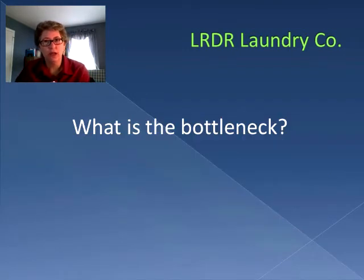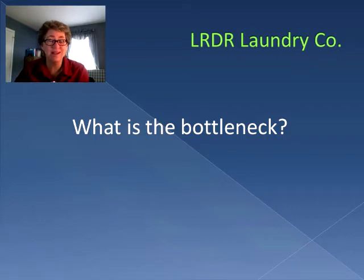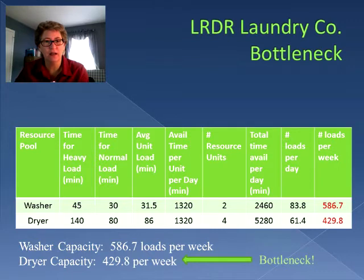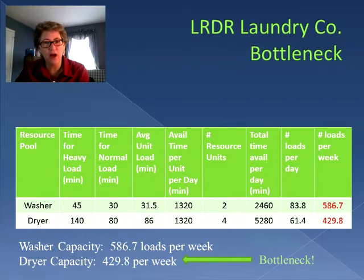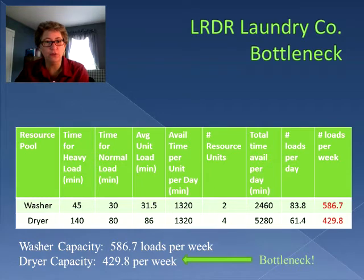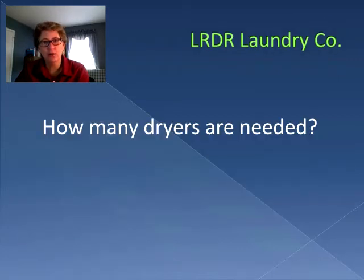When we worked on the problem in the last session, the big key was identifying the bottleneck. The bottleneck is the resource pool that is the slowest — it is what's actually preventing us from meeting our demand requirements. The washer resource pool could meet the requirement of 500 loads per week; in fact, it could complete 586.7 loads per week. But the dryer could only do 429.8, making the dryer our bottleneck. Even though there were four dryers, the loads that could be done in that resource pool was lower. So we need to determine how many dryers are actually needed to meet the required 500 loads per week.